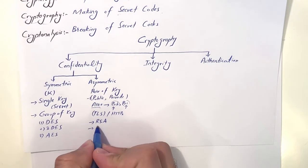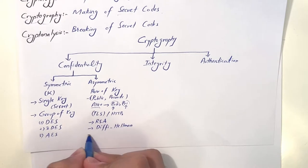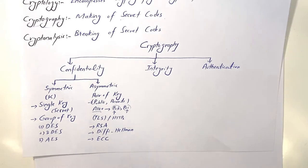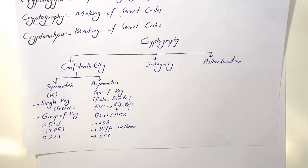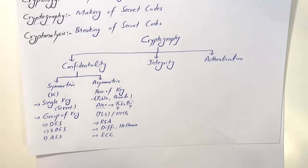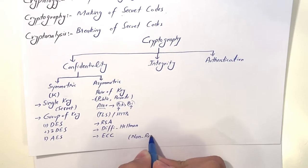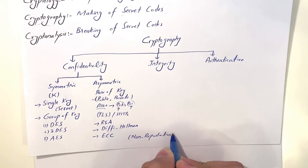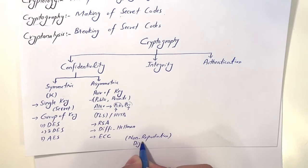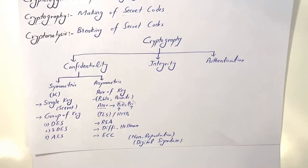Another asymmetric algorithm is ECC — Elliptical Curve Cryptography — which is a mathematical and geometric algorithm. One of the best features of asymmetric encryption is that it can provide non-repudiation: users cannot disown their actions. This is achieved through digital signatures, which we will discuss in detail.